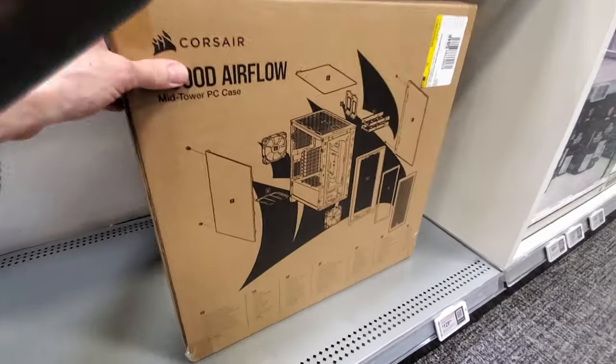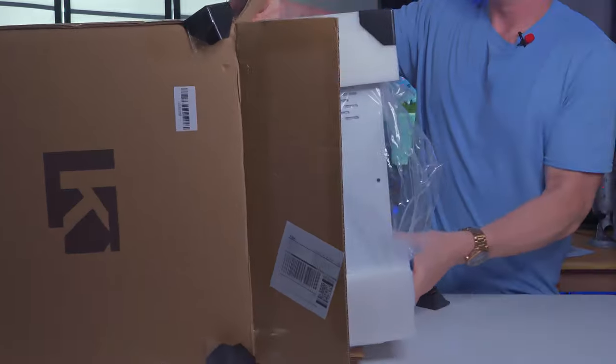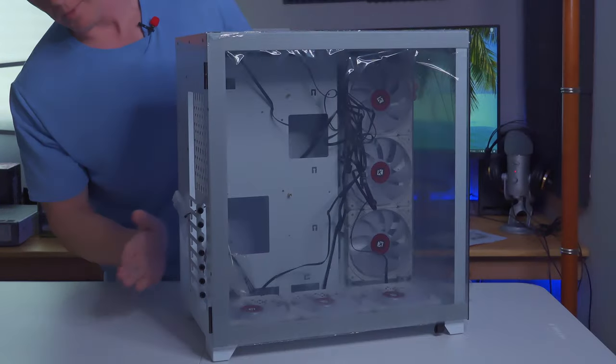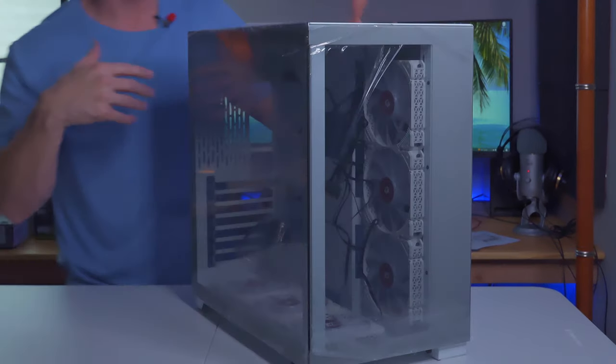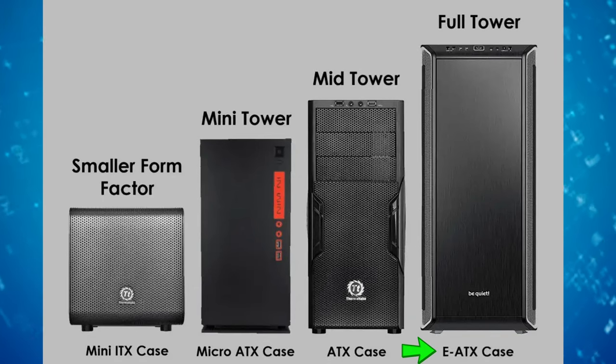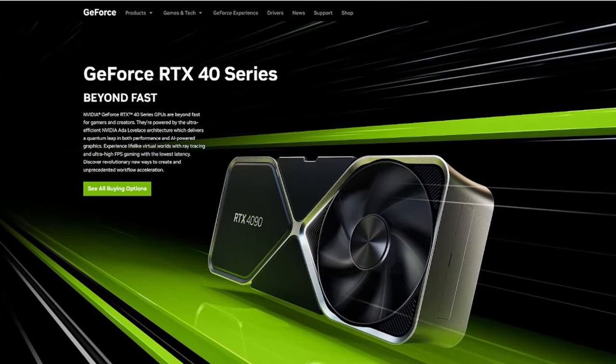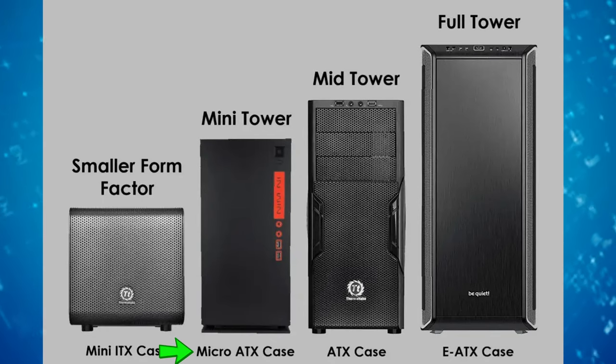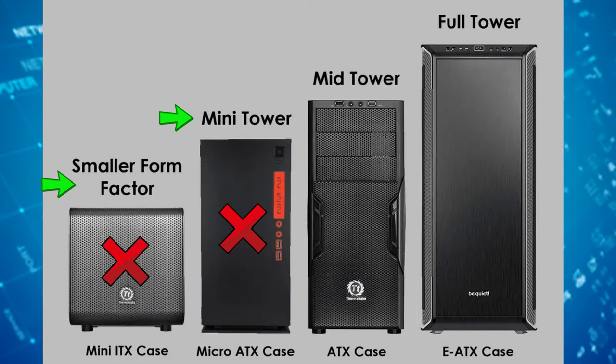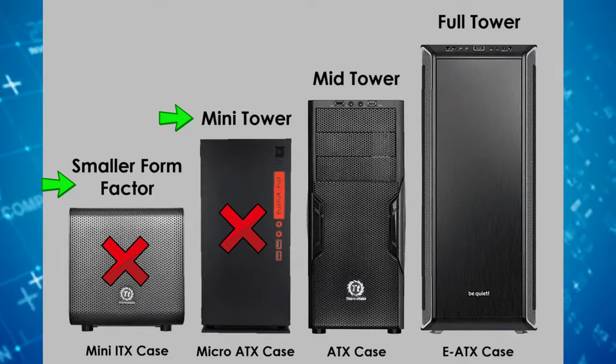The seventh PC building mistake is buying the wrong size PC case for your components. It can be tempting to buy a sleek and flashy case, but will it hold all your components — mainly your GPU? EATX full-size towers will hold everything easily. ATX mid-size towers can be finicky, especially with the massive GPUs of the RTX 30 and 40 series — check measurements to make sure an RTX 3080 or RTX 4090 will fit. Smaller cases like micro ATX and mini ITX require smaller motherboards and low-profile GPUs.